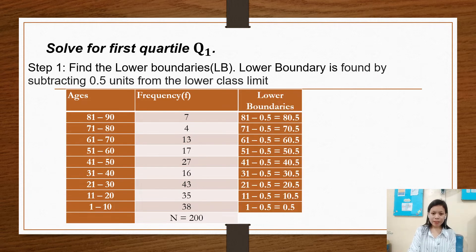So step 1, find the lower boundaries. Lower boundary is found by subtracting 0.5 units from the lower class limit. So in our ages, for example, we have 81 to 90. Our lower ages is on the left side. So our lower boundaries is 81 minus 0.5 equals 80.5, 71 minus 0.5 is 70.5, 61 minus 0.5 is 60.5, 51 minus 0.5 is 50.5.